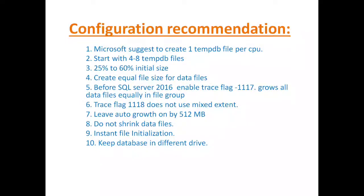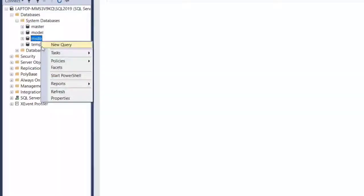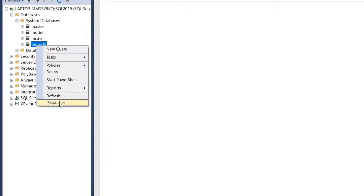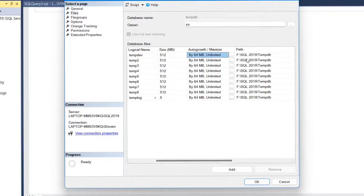This is about the tempdb configuration and we can see in SQL Server. Here you can see that while creation itself I have assigned 512 MB as initial size and auto growth is 64 MB. That is how it looks like. You can see that all the files are equally sized and auto growth is enabled and there is a dedicated drive for the tempdb.